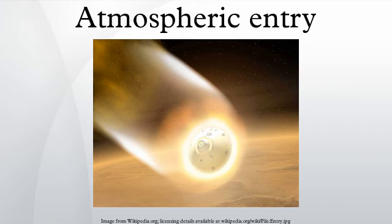Atmospheric entry is the movement of an object into and through the gases of a planet's atmosphere from outer space. There are two main types of atmospheric entry: uncontrolled entry, such as the entry of astronomical objects, space debris, or bolides; and controlled entry, such as the entry of technology capable of being navigated or following a predetermined course.